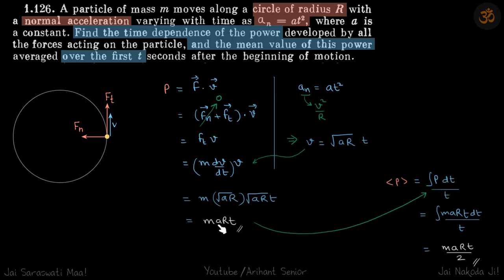Because we have already found power as a function of time, when we do integral P dt we get a simple result and our answer comes to be m*a*r*t/2.